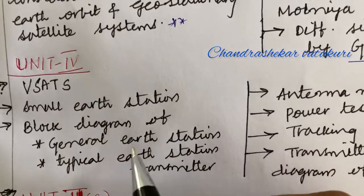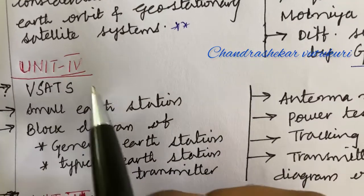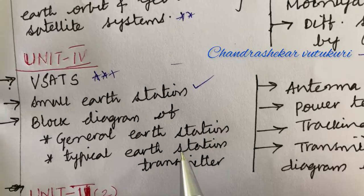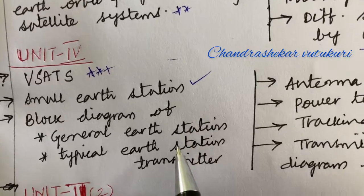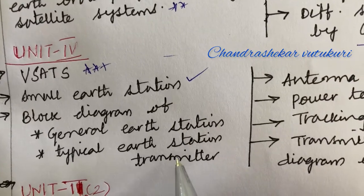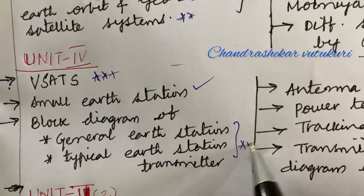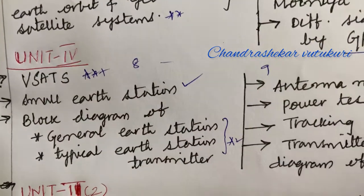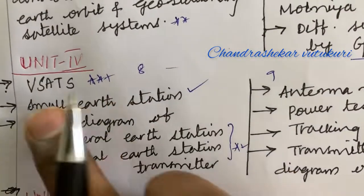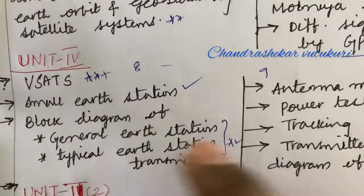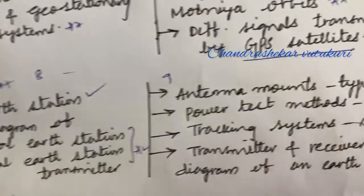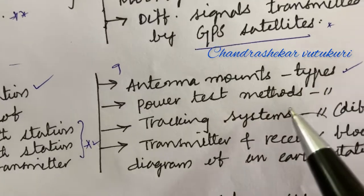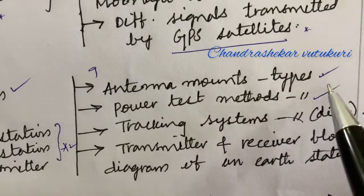Moving on to Unit 4, it's about VSATs. It is set with a very important question on the small hub station as well as the block diagram — explain the general hub station or the typical hub station transmitter. Out of these two you are going to get one question, which may be in the form of the 8th or 9th question in your question paper. Short questions related to the small hub station are also expected.